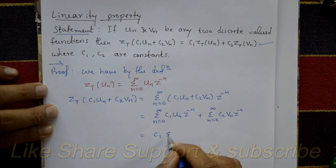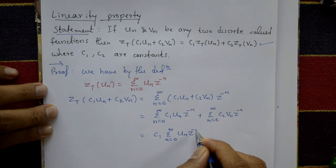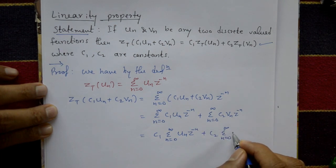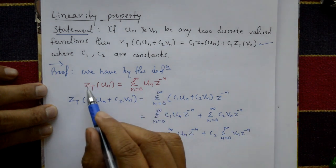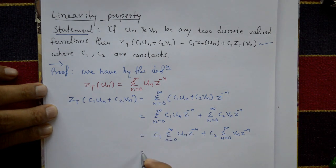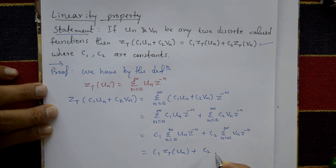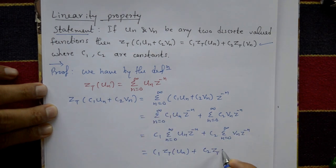This gives us c1 times the summation from n=0 to infinity of u(n)·z^(−n), plus c2 times the summation from n=0 to infinity of phi(n)·z^(−n). By definition, each summation is a Z-transform, so this equals c1·Z{u(n)} plus c2·Z{phi(n)}, which is the required right-hand side. Hence, the linearity property is proved.